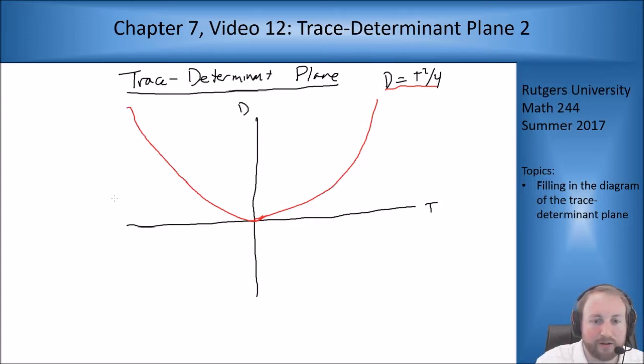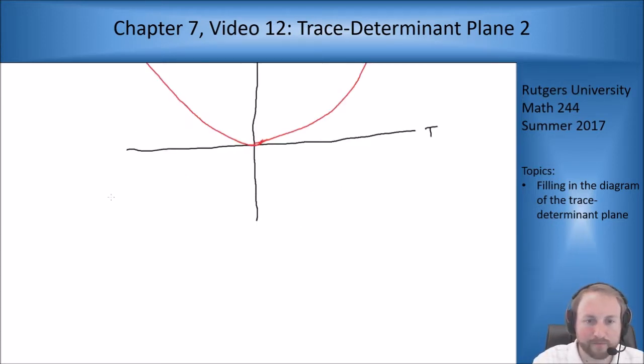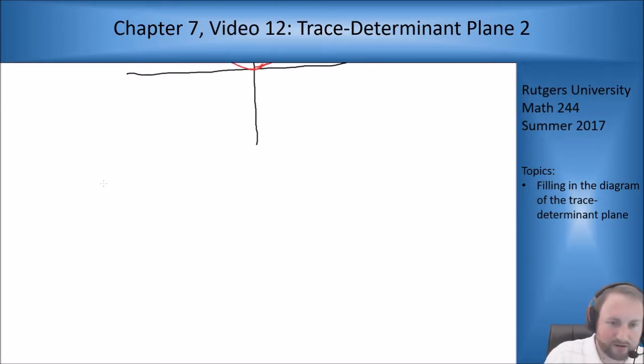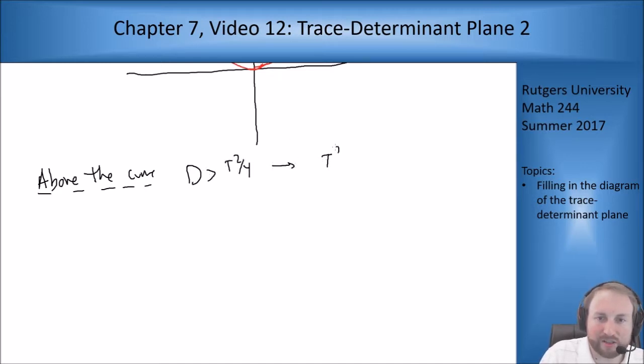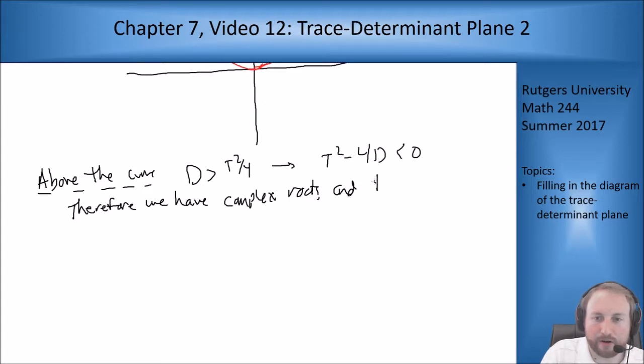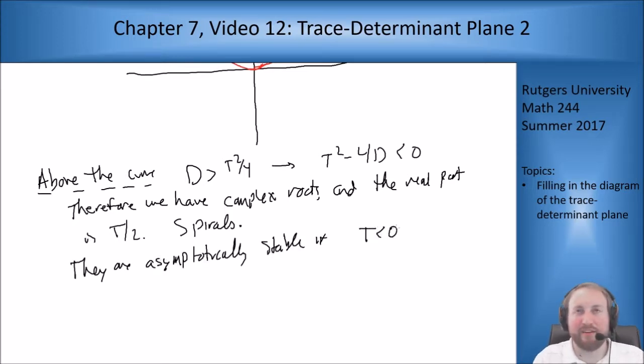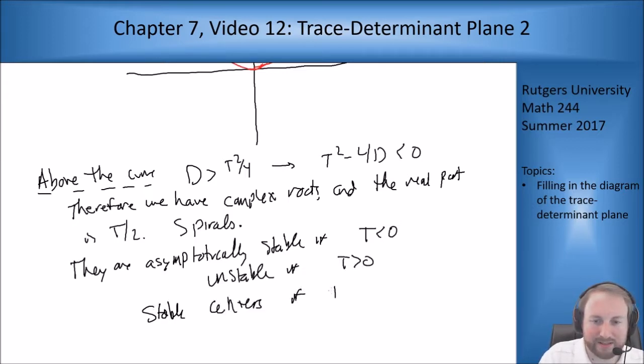Let's start with above the curve. If we're above the curve, then d is bigger than t squared over 4, which means t squared minus 4d is negative. Therefore, we have complex roots and the real part is t over 2. So this means we're getting spirals. They are asymptotically stable if t is less than 0 because then we have a negative real part, which means things are coming in. They are unstable if t is bigger than 0 and I get stable centers if t equals 0.